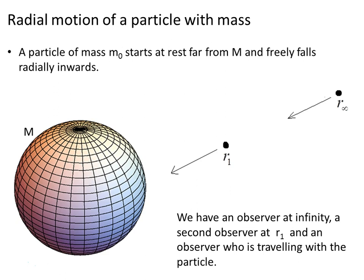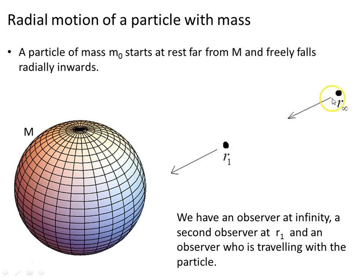A particle of mass m0 starts at rest far from the mass M, which is the source of the Schwarzschild spacetime around it. Far away at infinity, m0 starts at rest and freely falls radially inwards, responding only to the gravitational force. We have an observer at infinity, a second observer at r1, and an observer travelling with the particle down the radial path. Far from the source, the Schwarzschild field asymptotically decays to flat Minkowski spacetime in the limit as r goes to infinity.